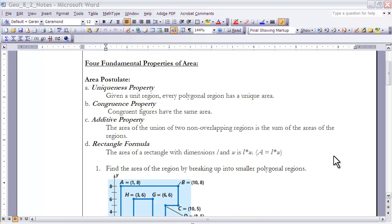The fourth and final area postulate property is the rectangle formula. Every formula that we're going to have for areas is really built off of the idea of the rectangle formula, and that just is that the area of a rectangle with dimensions of length and width is the length times the width. Therefore, area equals length times width.